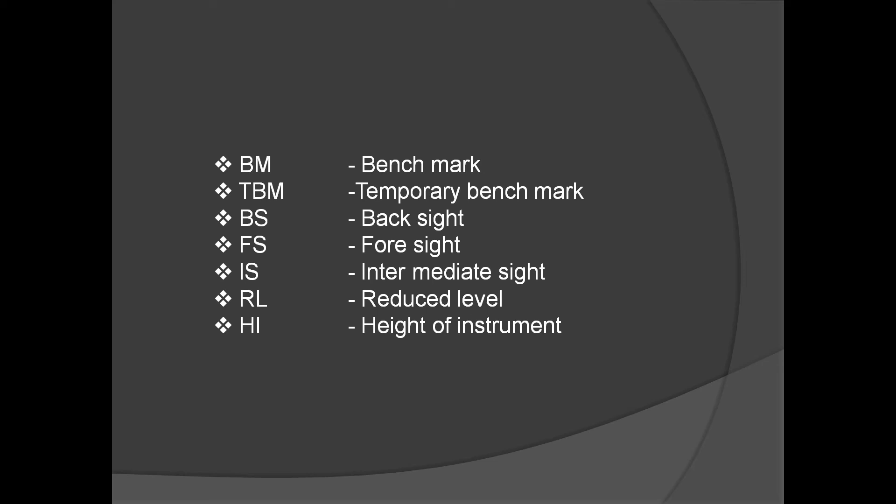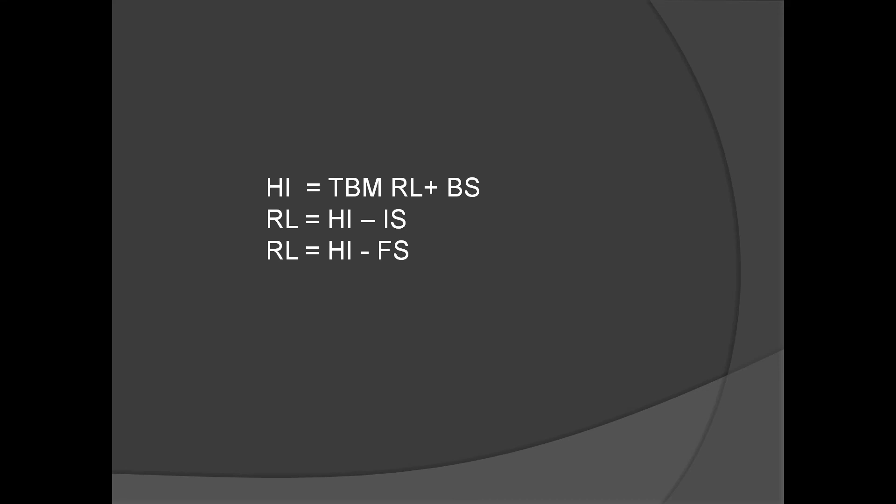We are going to have intermediate sight. The RL is the reduced level - we are going to fix the same point using auto-level. Then the first level is reduced level. At that point, height of instrument - if we fix a point, it is a constant height. We calculate height of instrument using temporary benchmark and benchmark.